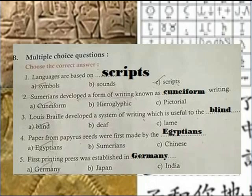The Sumerians developed a form of writing known as cuneiform writing. Louis Braille developed a system of reading for the blind. Papers made from papyrus reed were first made by the Egyptians. The first printing press was established in Germany.